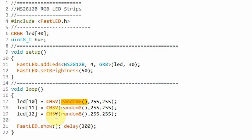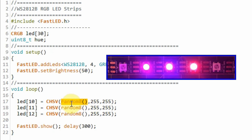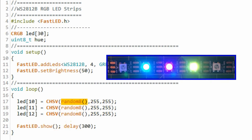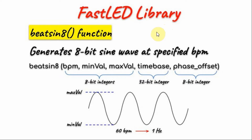In this next example, we set the hue of three LEDs using the random8 function. This function is part of the FastLED library and generates a random 8-bit integer between 0 and 255. The FastLED library also has a built-in BeatSin8 function, which can be used to generate an 8-bit sine wave at a specific frequency or specified beats per minute.